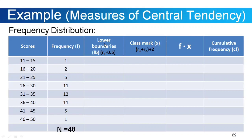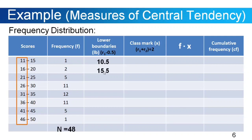Now let's go to the third column: lower boundaries, represented by Lb. To obtain our lower boundaries, subtract 0.5 from each lower value in our rows. So for row one: 11 minus 0.5 gives 10.5. On the second row: 16 minus 0.5 gives 15.5. On the third row: 21 minus 0.5 gives 20.5, and so on.